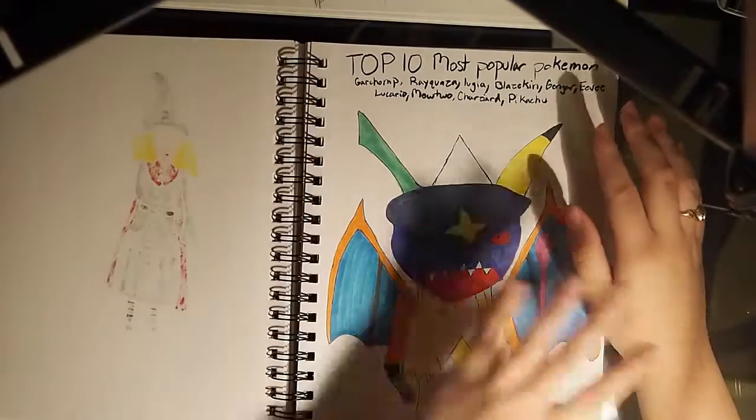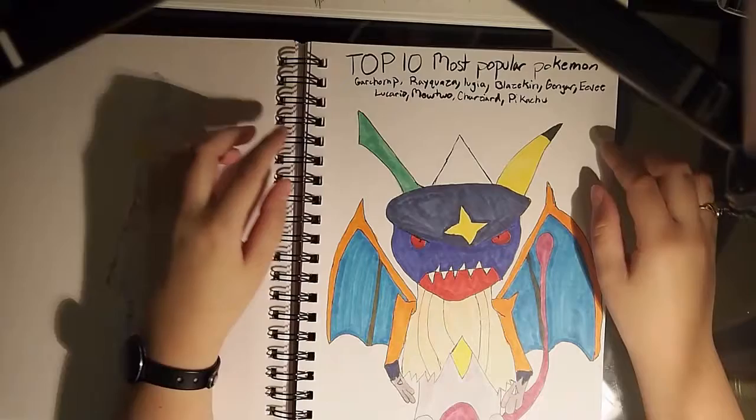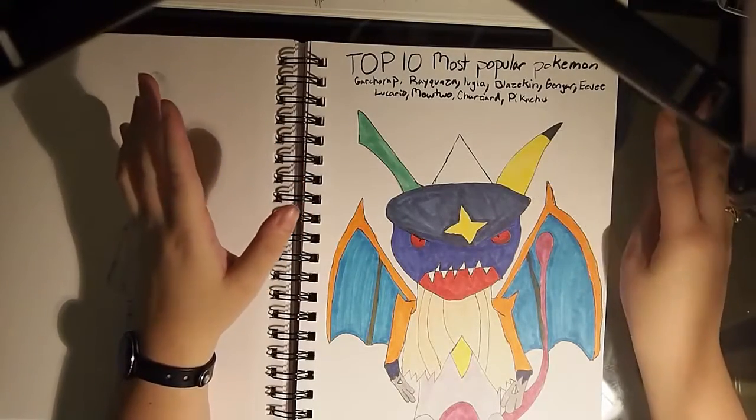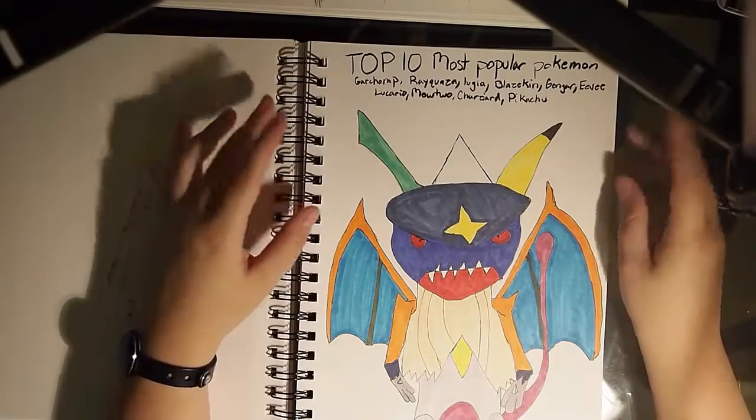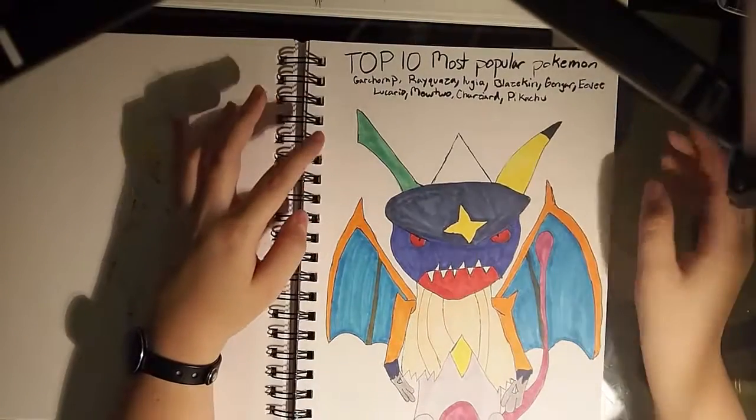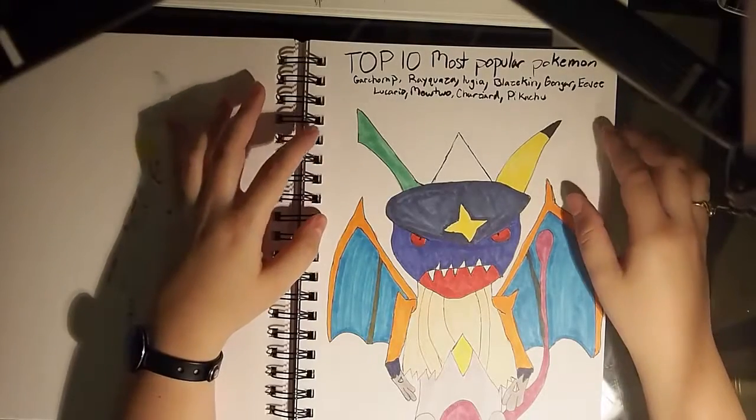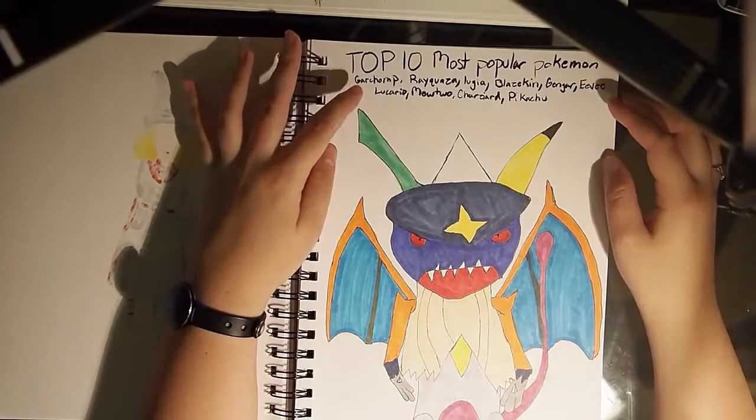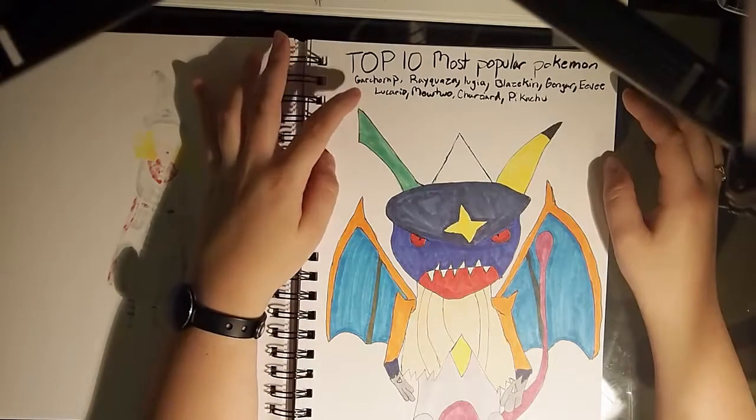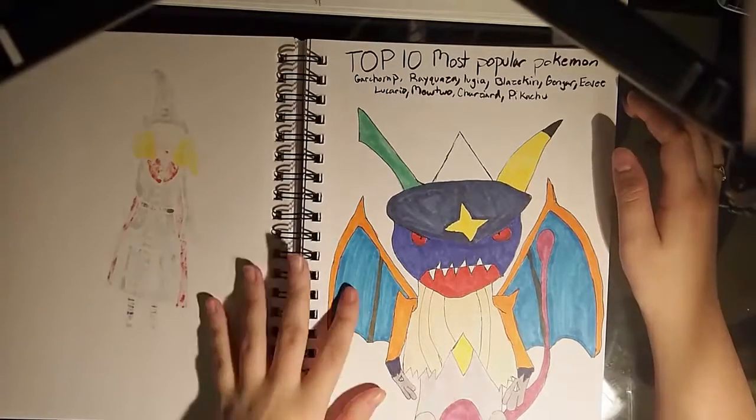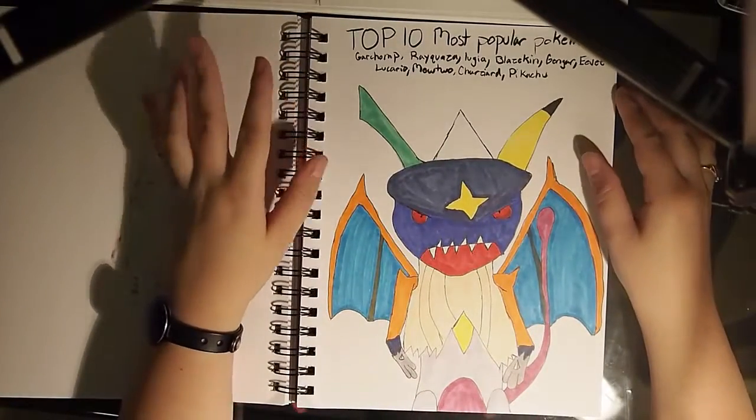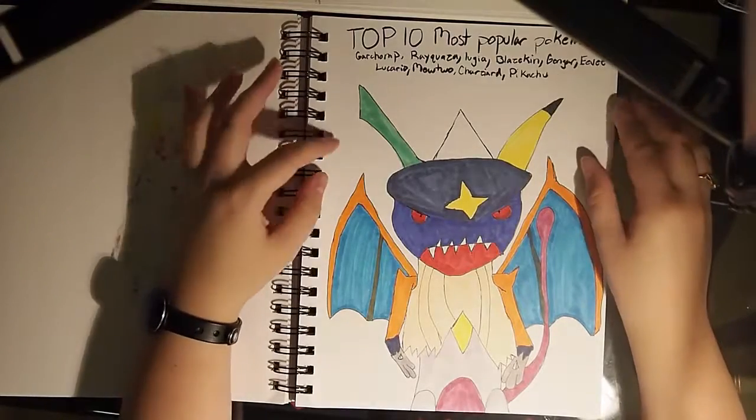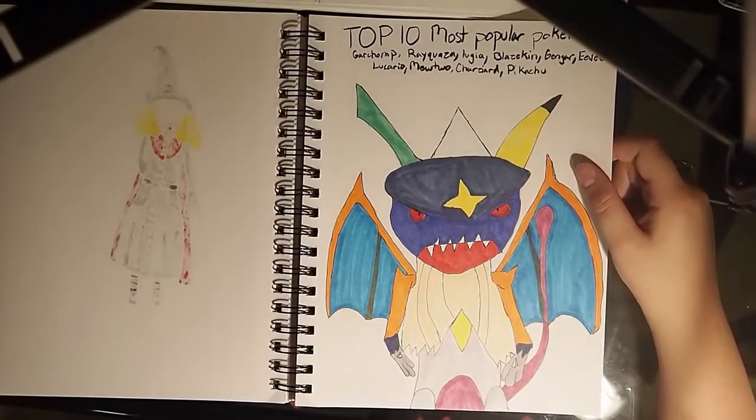So if you guys don't watch Jazza Draws, I'll link his channel down below. He's having a challenge, a Pokemon mashup challenge. If you guys want to enter that, go look at his channel. He's great. He does a lot of digital art and streams on Adobe. So I decided this is not going to be entered because I feel like it actually breaks some of the rules. It's the top 10 most popular Pokemon. I Googled what the most popular Pokemon were. So I combined all top 10 together. So it's Garchomp, Rayquaza, Lugia, Blaziken, Gengar, Eevee, Lucario, Mewtwo, Charizard, and Pikachu. If you look really closely, you can see all 10 Pokemon in this little picture here.